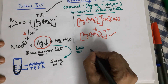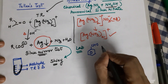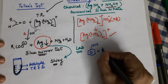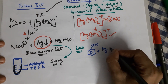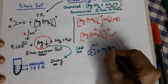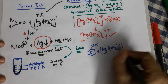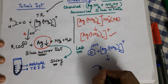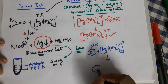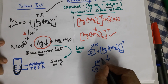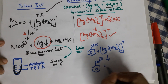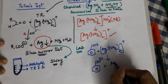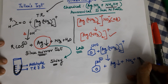Let us take an aromatic aldehyde — benzaldehyde — because aromatic aldehydes react with Tollens reagent to give a silver mirror. Benzaldehyde reacts with [Ag(NH₃)₂]⁺ to give benzoic acid (with H⁺ lost in the basic medium), silver metal deposited, and by-products ammonia and water.